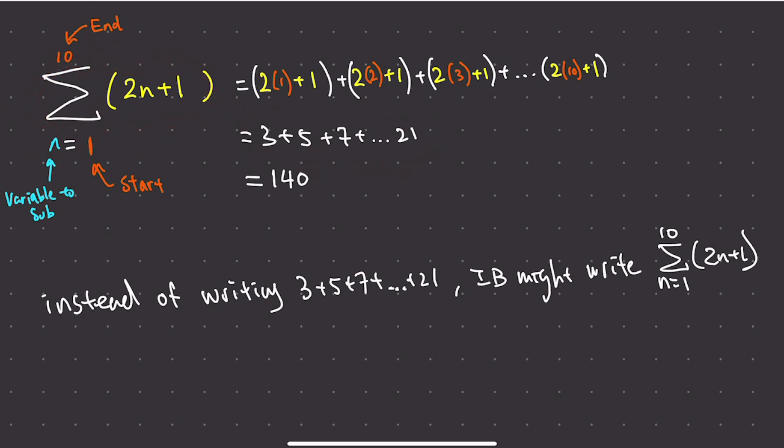Let's break it down. Whenever we see this symbol, this is the sigma symbol. With this symbol, it comes with four key components. You must have a variable to sub - they must give you a letter here, and then there will be an equal sign here, and then there must be a number here. This is a starting number. And there must be an ending number up here. And then in this area here, we have something I call the formula. So in the formula, the variable to sub must exist.